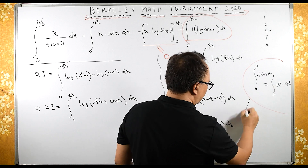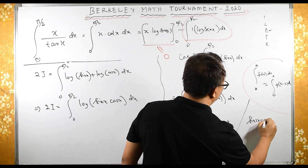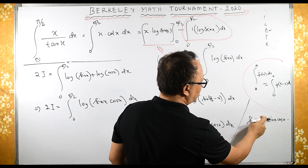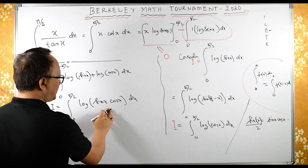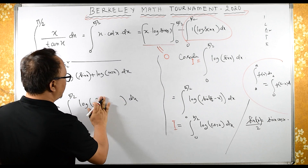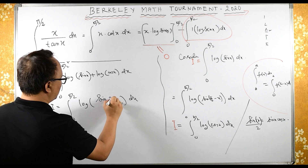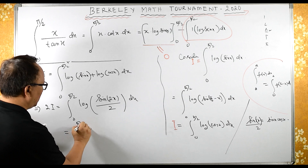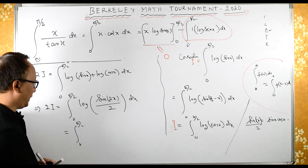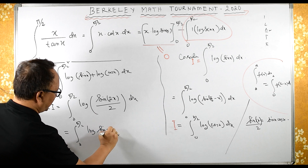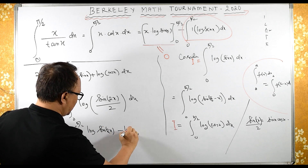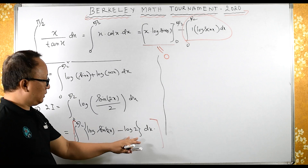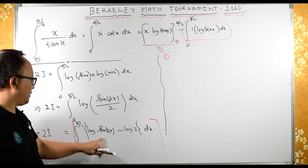Using the formula sin(2x) = 2·sin(x)·cos(x), we get sin(x)·cos(x) = sin(2x)/2. So 2I = ∫₀^{π/2} log(sin(2x)/2) dx. By log property log(m/n) = log m − log n, this becomes ∫₀^{π/2} [log(sin(2x)) − log(2)] dx.